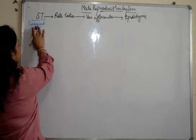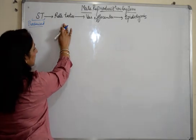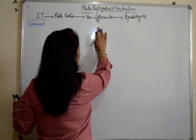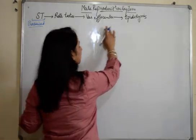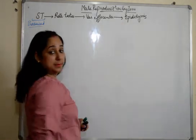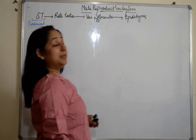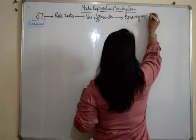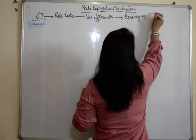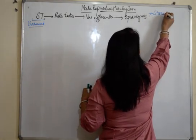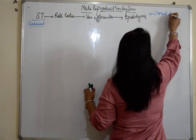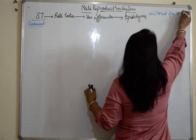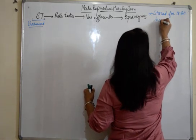From seminiferous tubules they move to rete testes, from where they go to vasa efferentia, and from vasa efferentia they move to epididymis. Epididymis is the part where the sperms are stored for 18 to 24 hours.